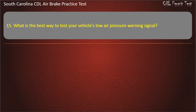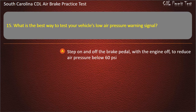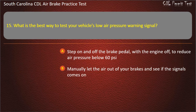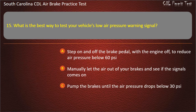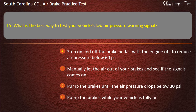Question 15: What is the best way to test your vehicle's low air pressure warning signal? Step on and off the brake pedal with the engine off to reduce air pressure below 60 pounds per square inch; manually let the air out of your brakes and see if the signal comes on; pump the brakes until the air pressure drops below 30 pounds per square inch; or pump the brakes while your vehicle is fully on. Answer: Step on and off the brake pedal, with the engine off, to reduce air pressure below 60 pounds per square inch.